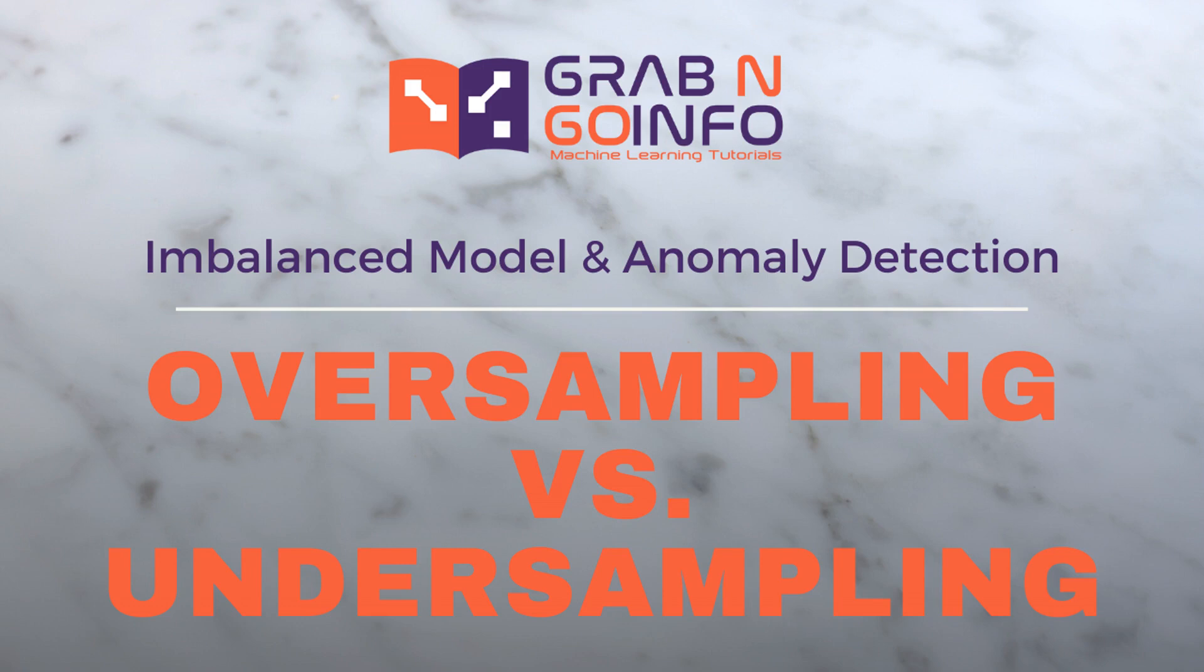We will compare four methods with the baseline random forest model results. They are random oversampling, synthetic minority oversampling technique, which is usually called SMOTE, random undersampling, and near-miss undersampling.